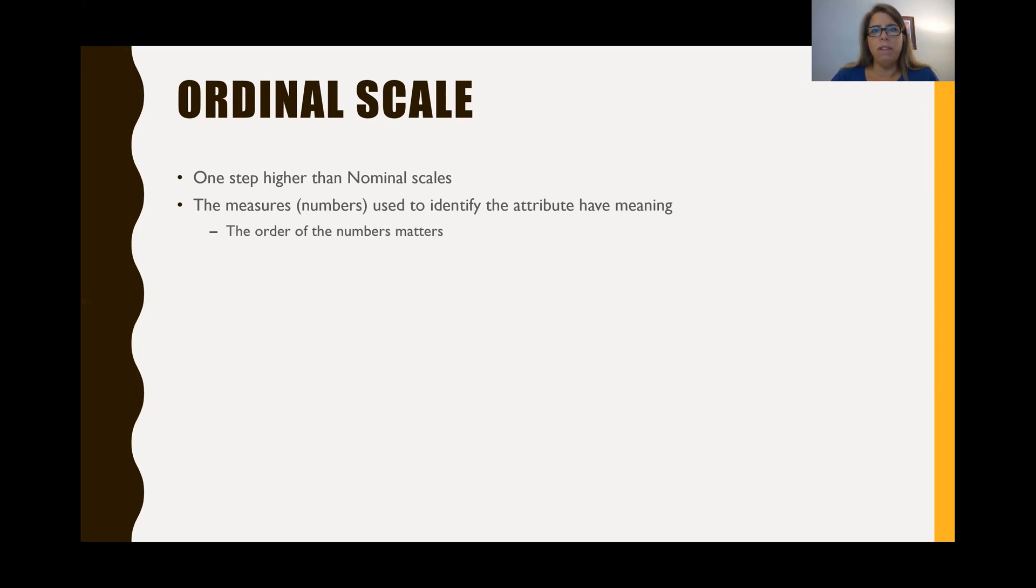And the order of the numbers matters. So this means that a hierarchy exists. So there is one level is more than a different level. So this hierarchy matters, and one category is better or more than the other. And so from here on out, whether it be ordinal scales, intervals, or ratio, there will always exist a hierarchy.